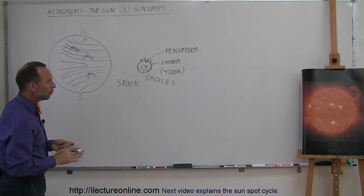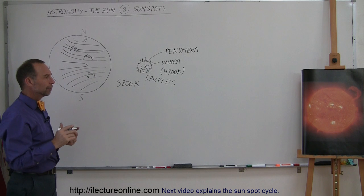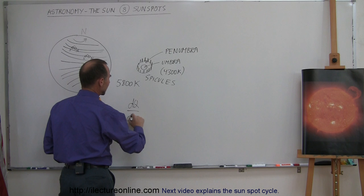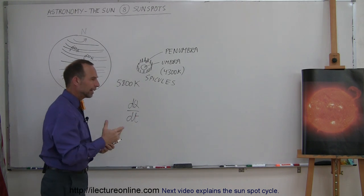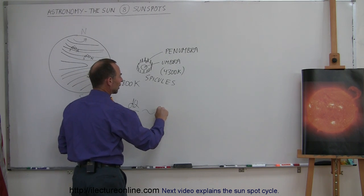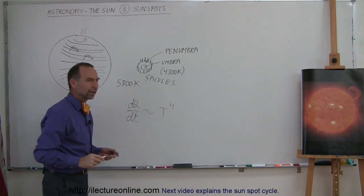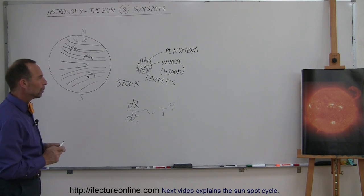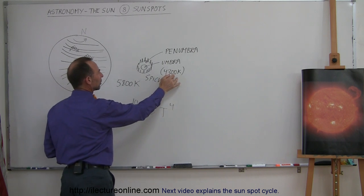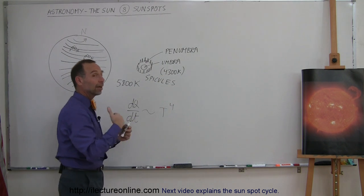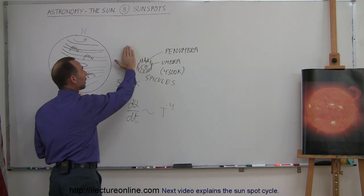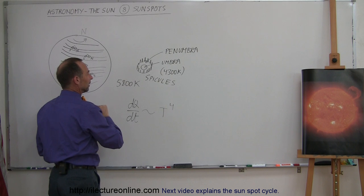The reason it looks a lot darker is because the amount of power that is being expelled from a certain surface of the Sun is proportional to temperature to the fourth power. That comes from the Stefan-Boltzmann law. If we take 5,800 and raise it to the fourth power versus 4,300 to the fourth power, there is a significant difference in the amount of energy expelled from a sunspot compared to a similar area on the rest of the surface.